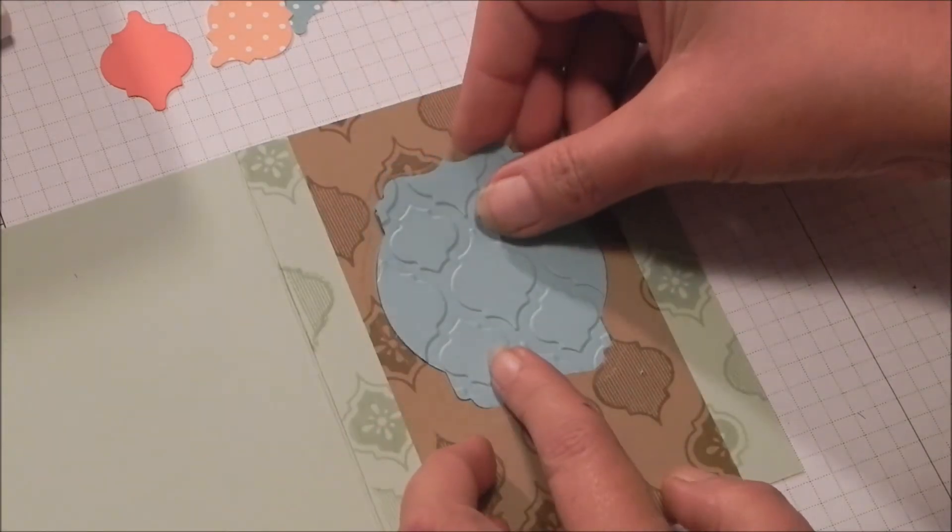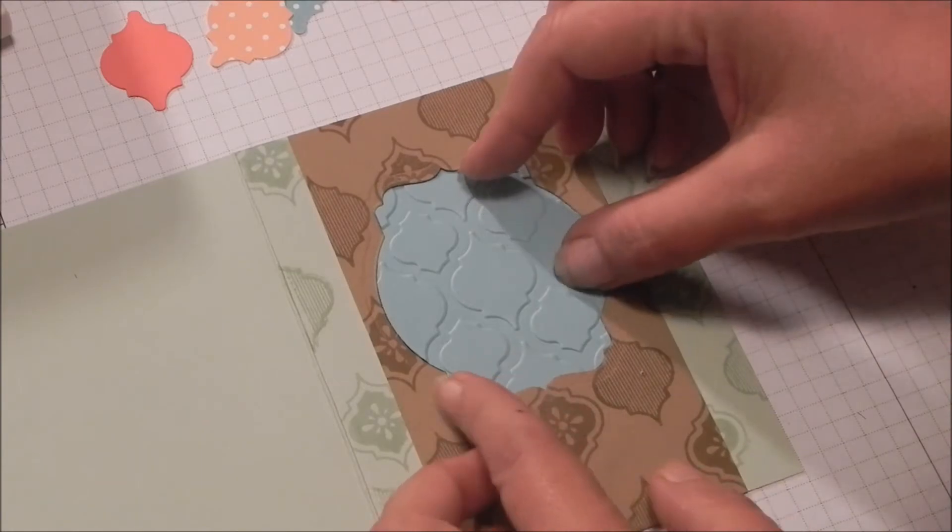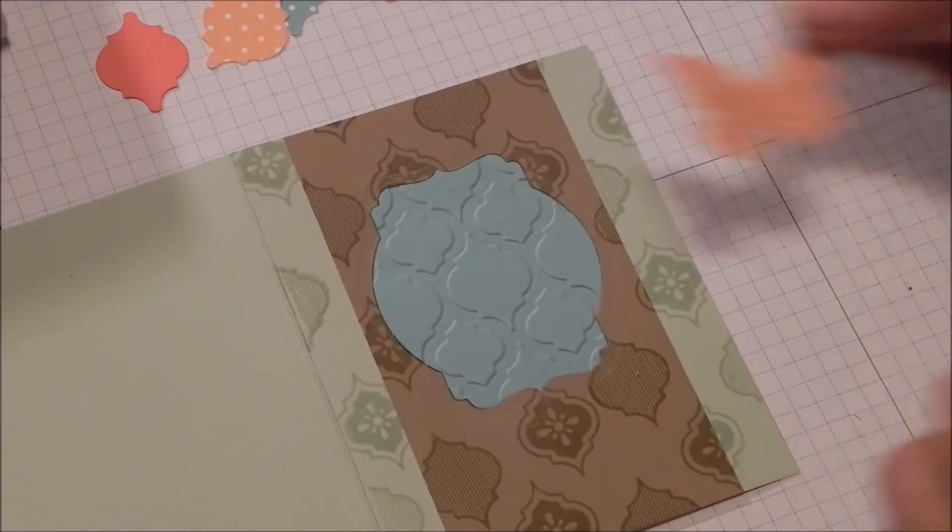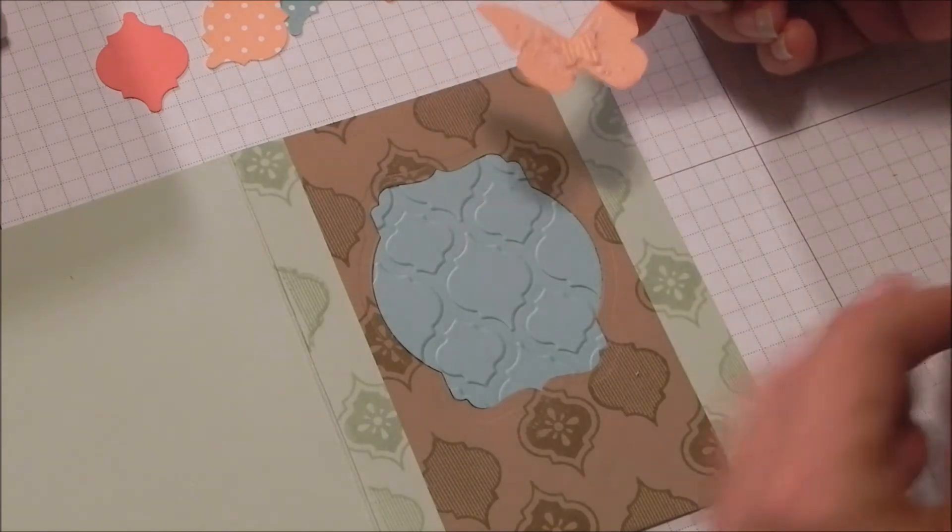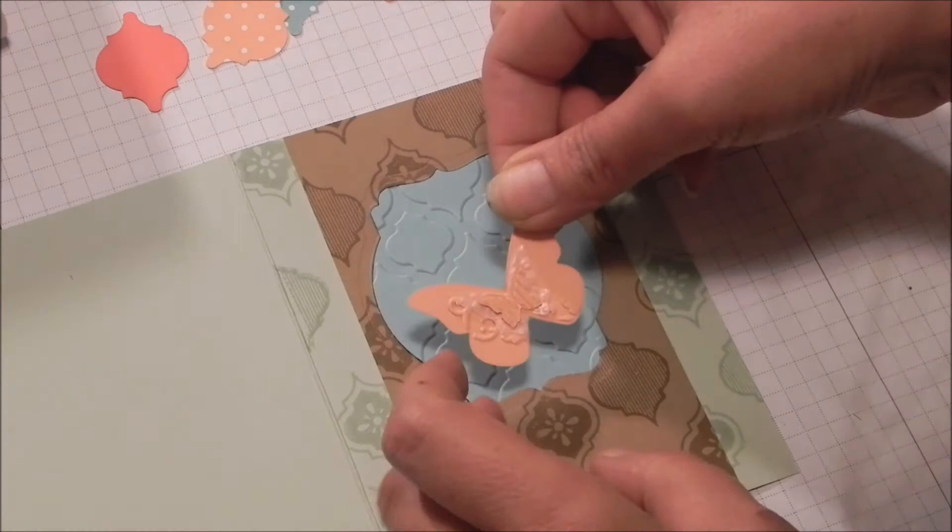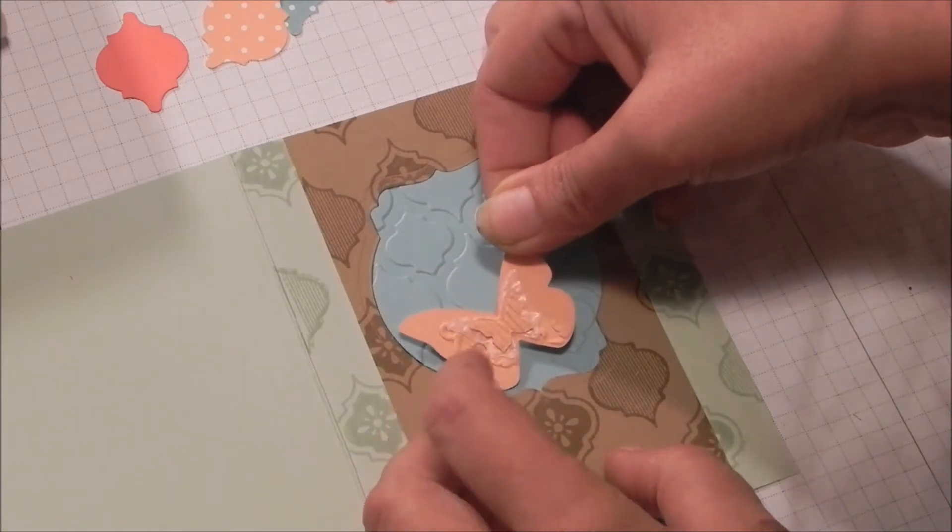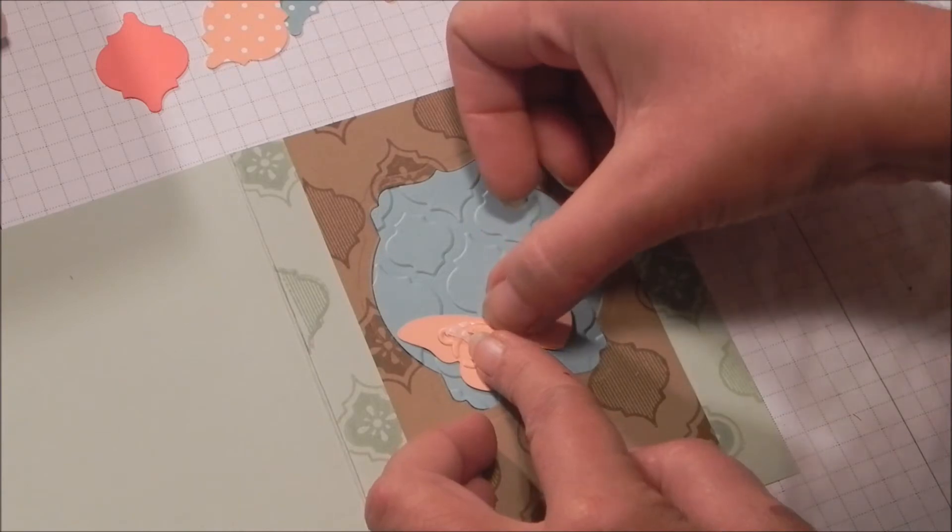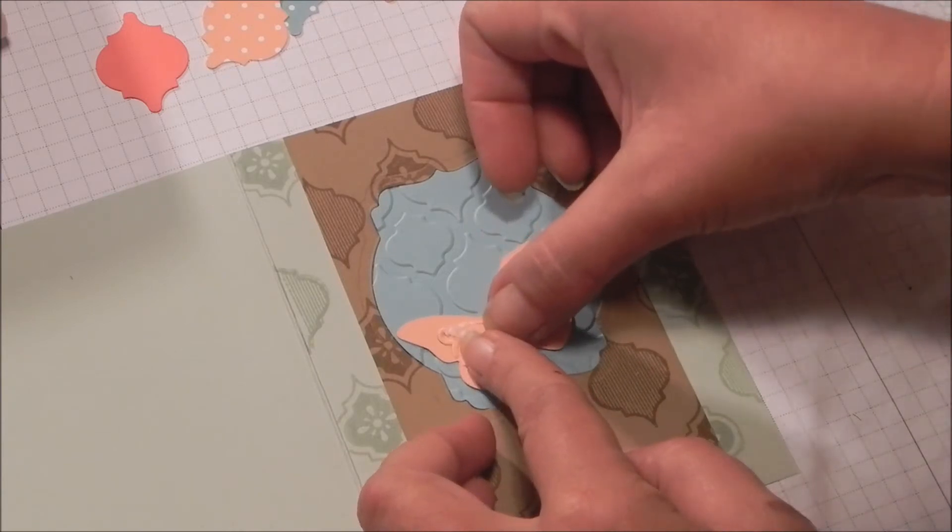Take this dry embossed image. Go ahead and pop it right in there. And then if you've got your butterflies, layer them and add whatever you want to them. The only restriction at this point is that they stay within this window. You can't have anything sticking out because obviously this blue piece will be attached to the back of your card or the inside of your card.